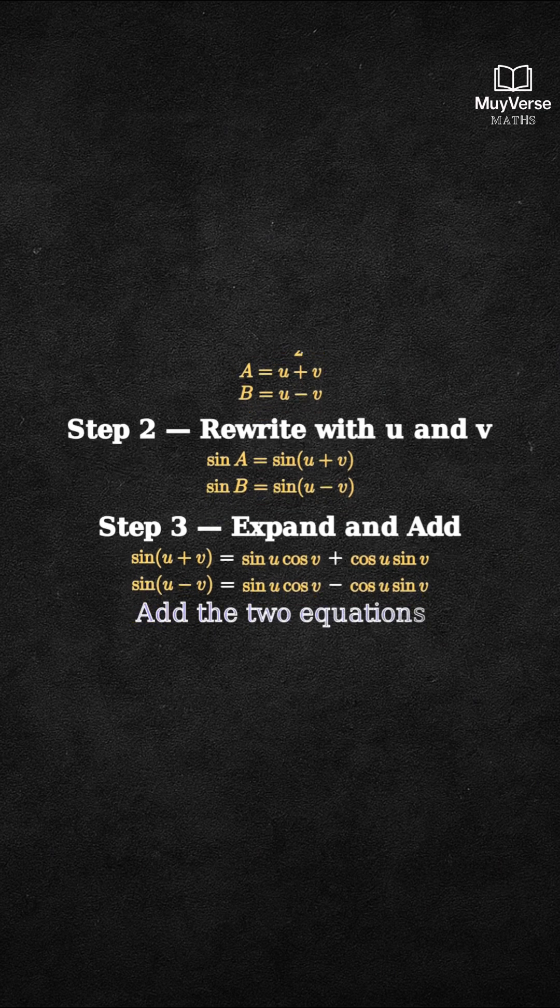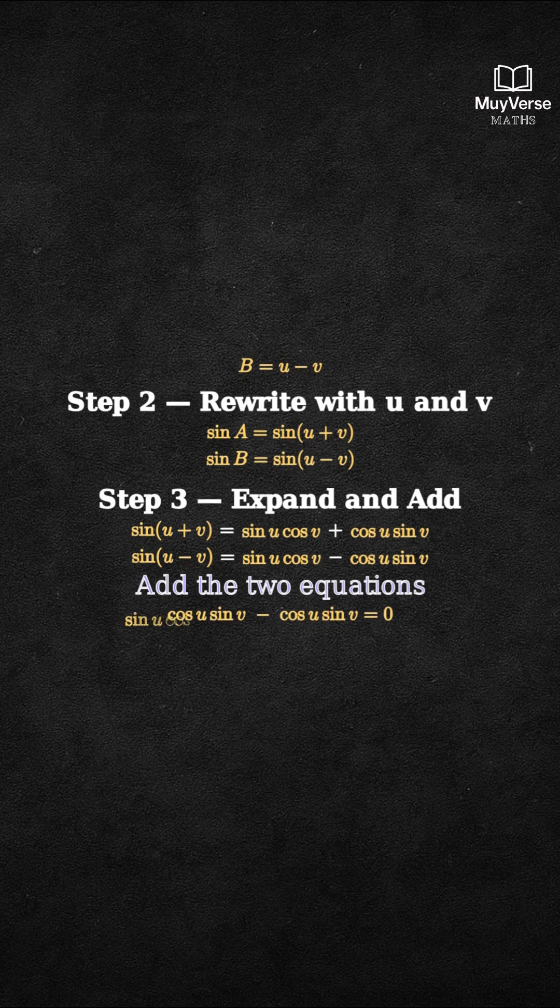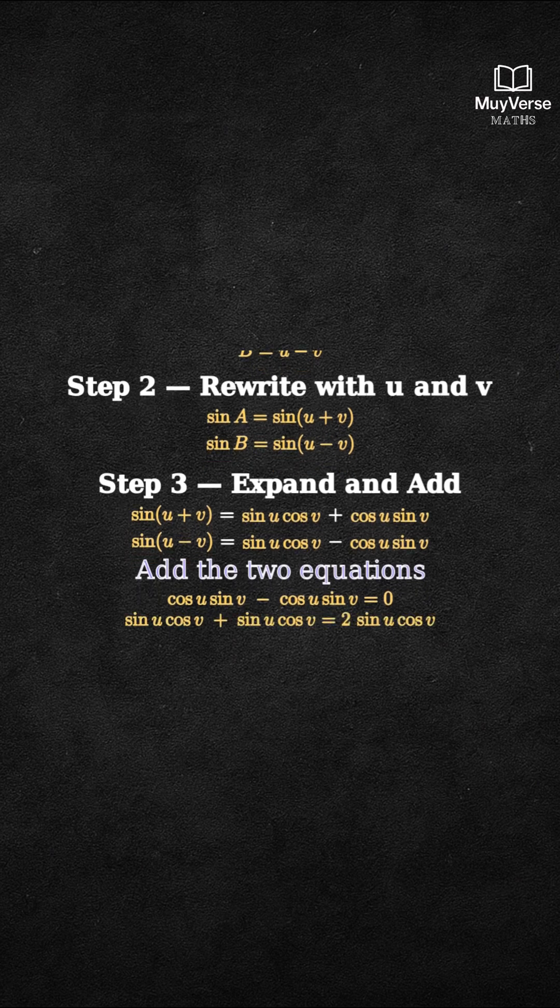Now, add the two lines together. The plus cosine U sine V and the minus cosine U sine V cancel. What remains is two copies of sine U cosine V.